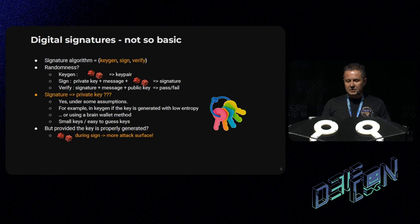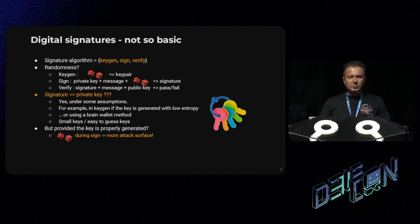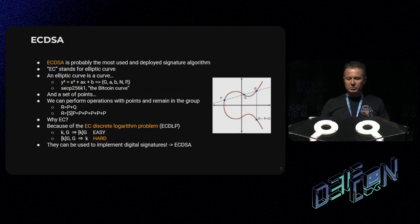If everyone wants your private key, is it possible to obtain it just by looking at the signatures? Well, in general, no. But under some assumptions, yes. For example, if you generated the key with low entropy or with short seeds, or using a brain wallet, maybe it's easy to guess. But provided that the key is properly generated, is it possible to obtain it from your signatures? Remember, there is randomness in the signature generation, so there is more attack surface that we can explore.